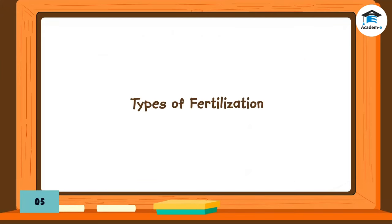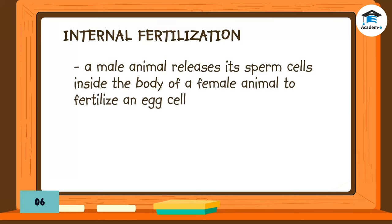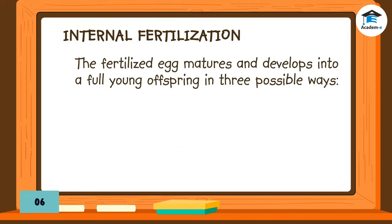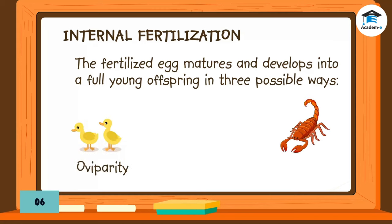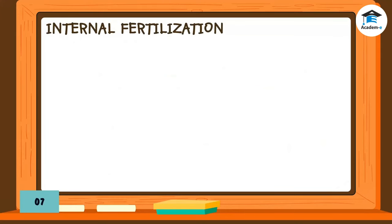Types of fertilization: Internal fertilization happens when a male animal releases its sperm cells inside the body of a female animal to fertilize an egg cell. This type of fertilization occurs inside the parent animal's body, often in the female's body. The fertilized egg matures and develops into a full young offspring in three possible ways: oviparity, ovoviviparity, and viviparity.